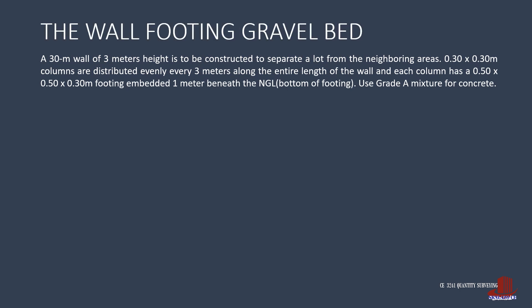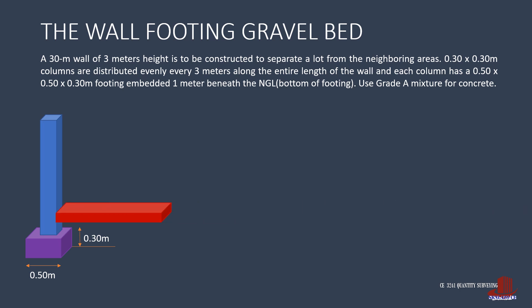Each footing requires a gravel bed to separate the concrete from the grade. The volume for the wall footing gravel bed is 10 spans times the width of 0.25 meters, the thickness of 2 inches or 0.05 meters, and the wall footing length of 2.7 meters. The total volume for the wall footing gravel bed is 0.3375 cubic meters.